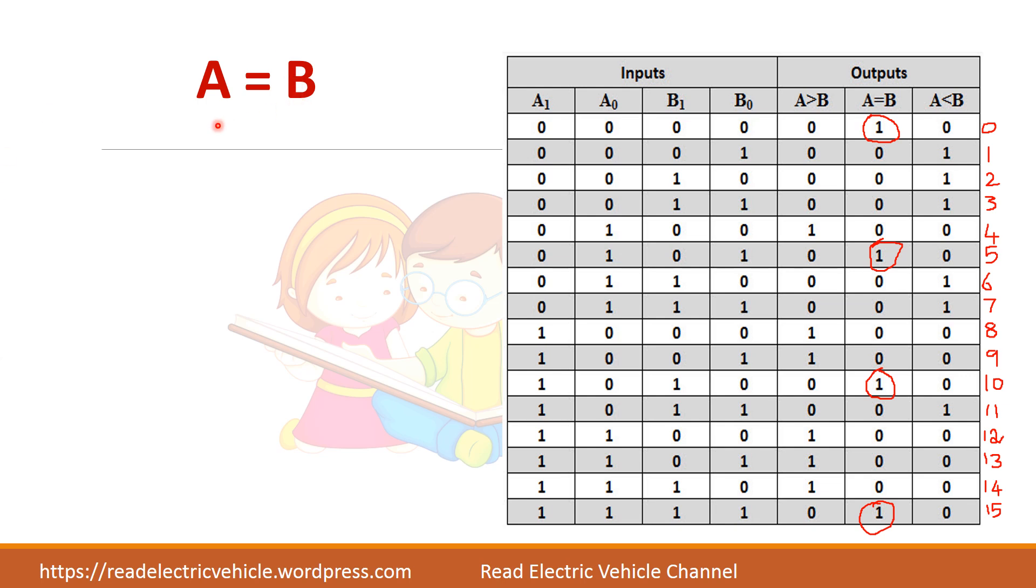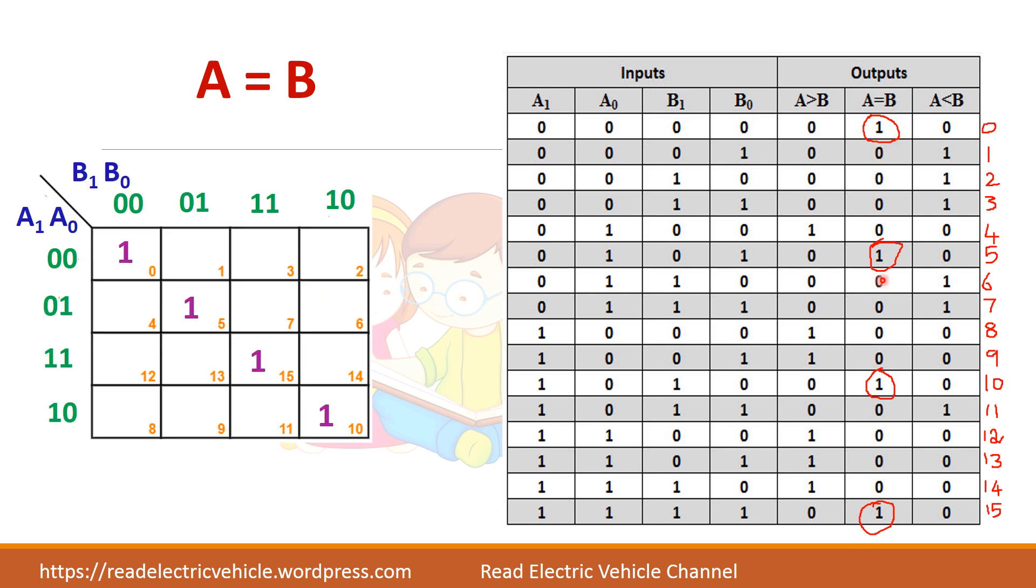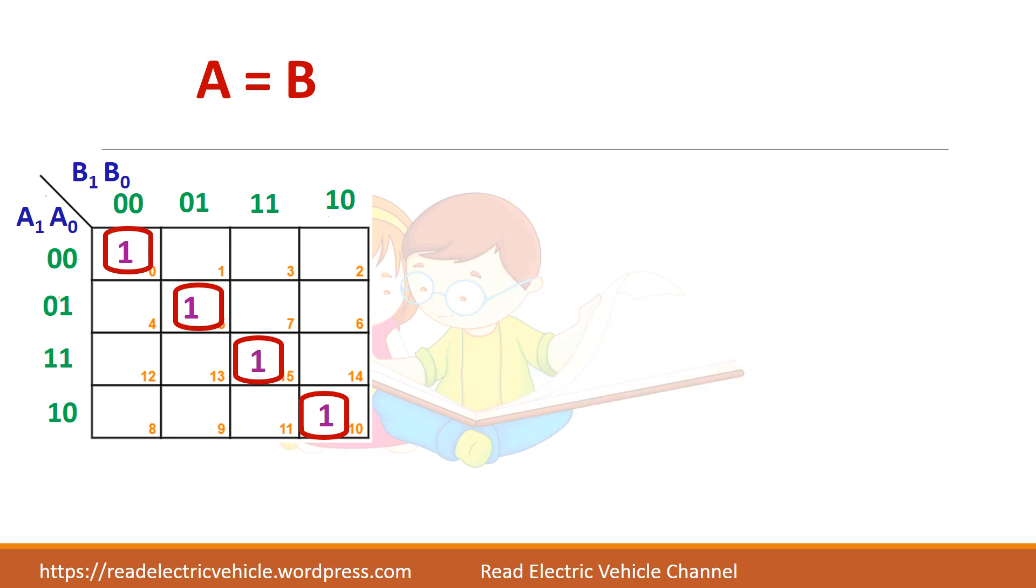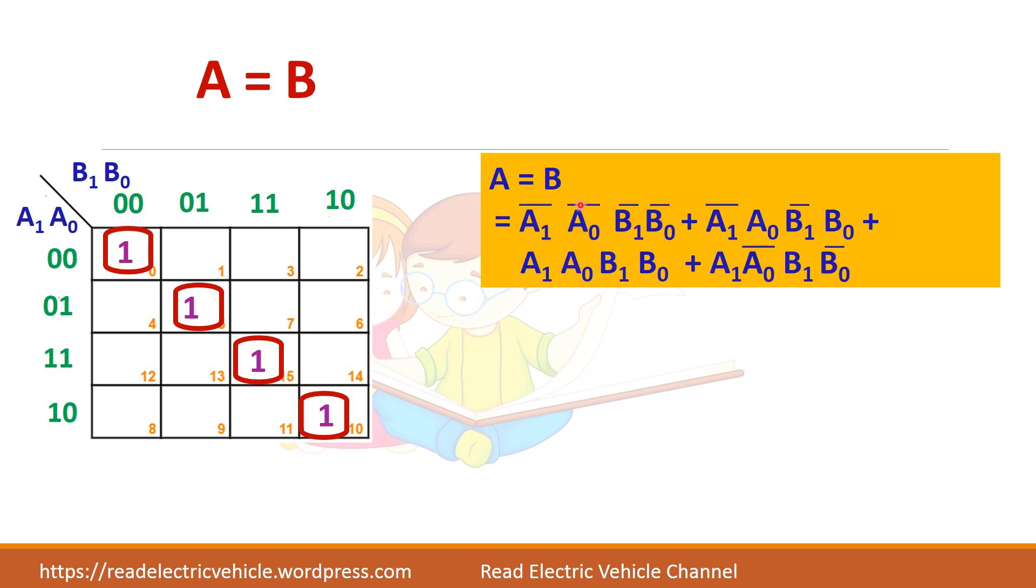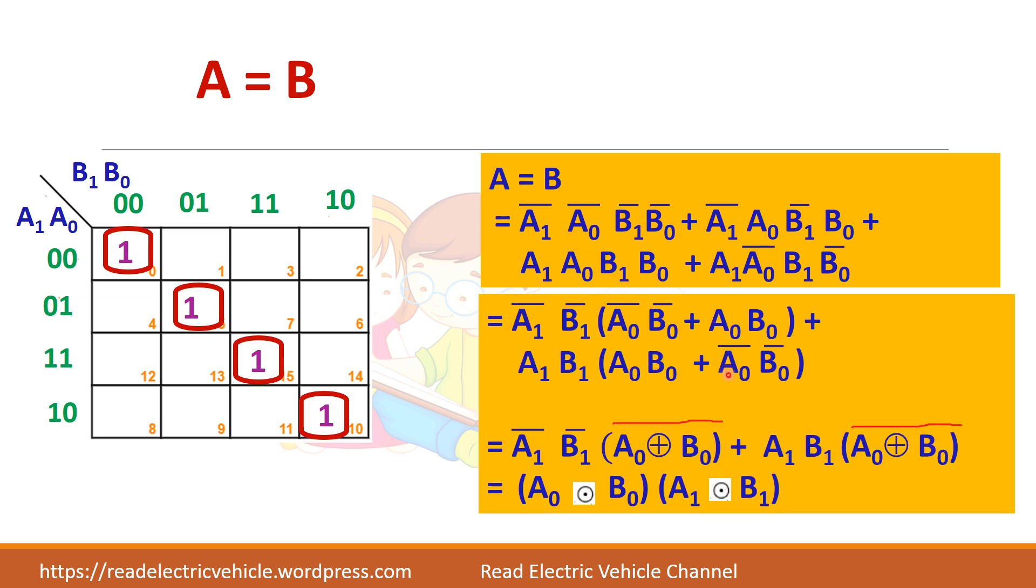Next we have A equal to B. So here you mark the min terms which will give you 1 that is 0, 5, 10 and 15. So it is coming like this. You cannot combine any of the 1s together. So you have to write the expression for this. Now we will write the equation. Since all the four 1s are independent, you will get four terms in the expression. So which can be simplified like this. That is we are taking the common terms out. So that you will get this type of expression.